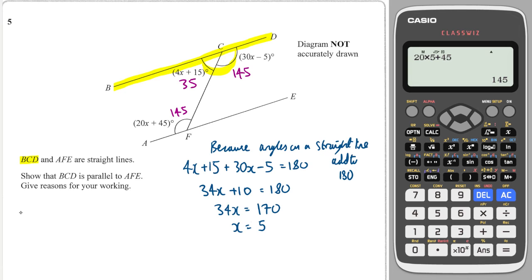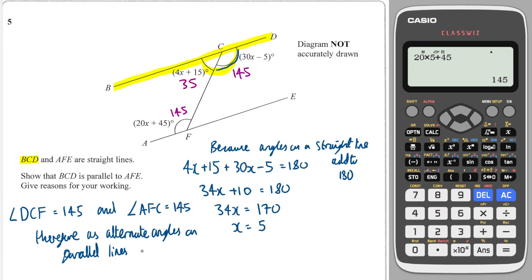And I'm going to write now that the angle DCF, which is this one here, is equal to 145. And you can say therefore, as alternate angles on parallel lines are equal, for example, the two lines must be parallel. And we've done. We've shown that they are two parallel lines. With full working. Fantastic.